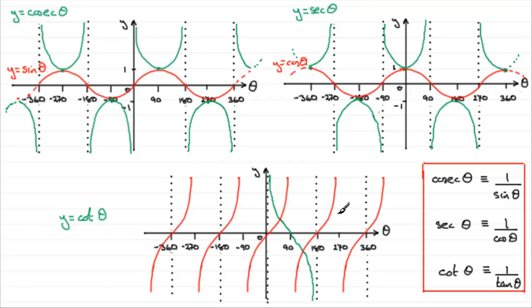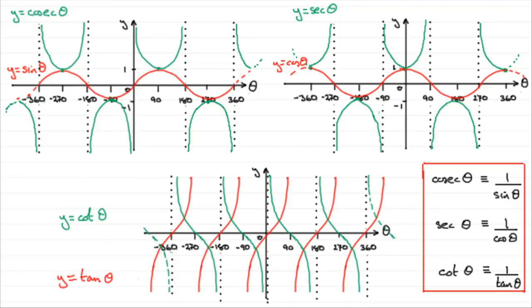And we can carry on this argument in each of the sections, so you should be able to generate this curve in all sections. I hope that's given you some idea of how to sketch the graphs of cosec theta, sec theta, and cot theta without having to resort to using your calculator — just base them on the graphs of sine theta, cos theta, and tan theta.